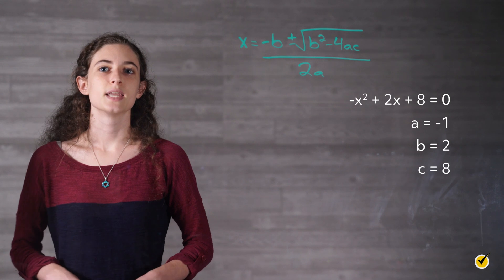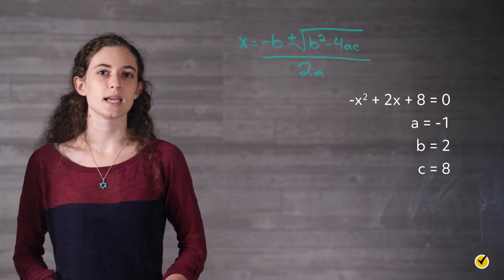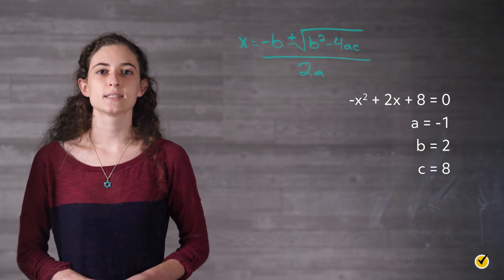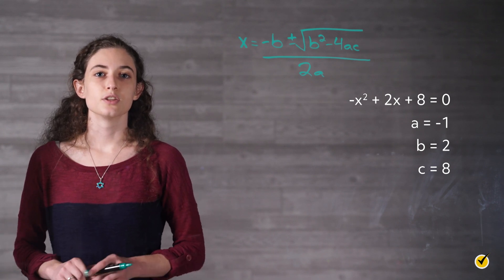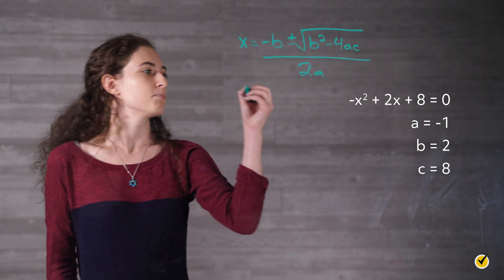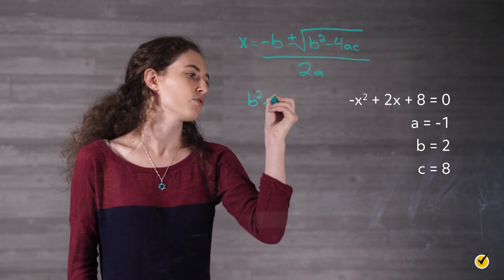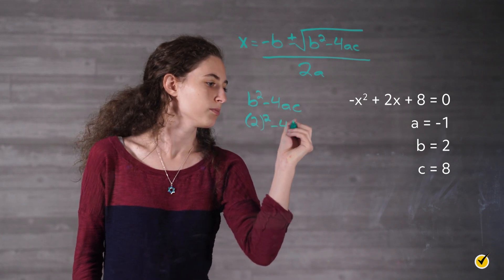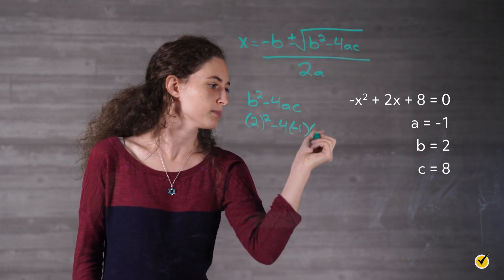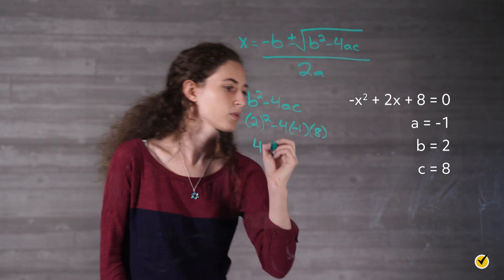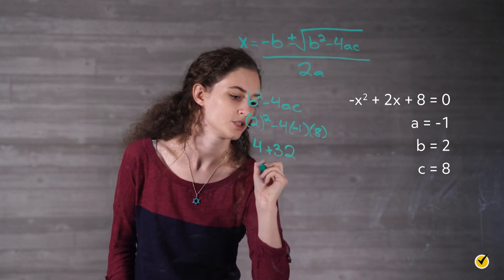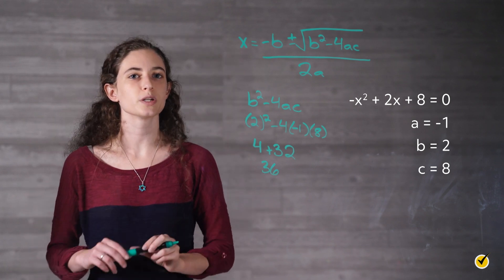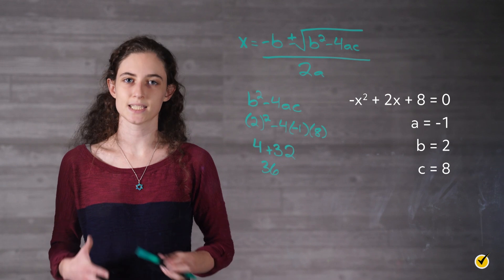Using our ongoing example, negative x squared plus 2x plus 8 equals zero, a equals negative 1, b equals 2, and c equals 8. The discriminant d is b squared minus 4ac, which is 2 squared minus 4 times negative 1 times 8, which is equal to 4 plus 32, which is equal to 36. Since 36 is greater than 0, we know that there are two real solutions to our equation, as expected.